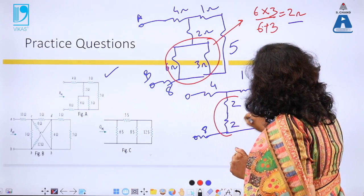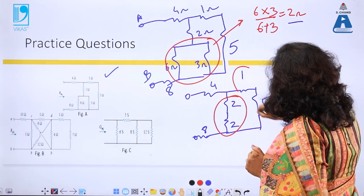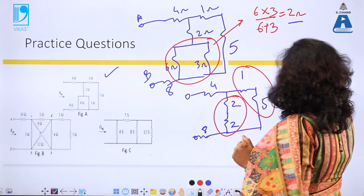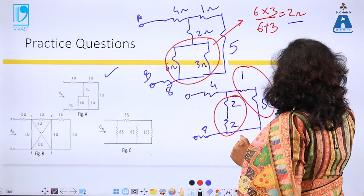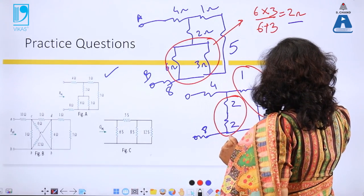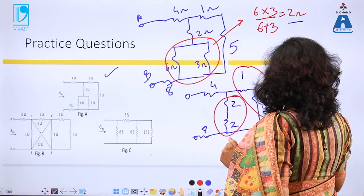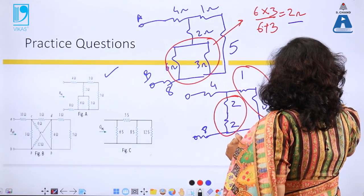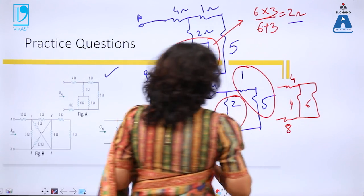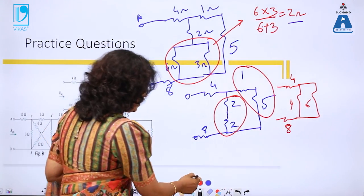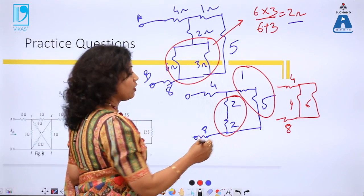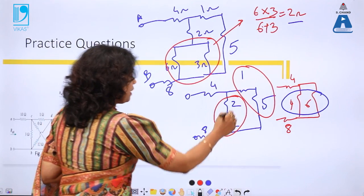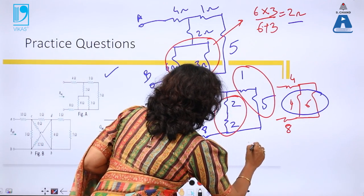Redrawing: replacing the 6 Ω and 3 Ω parallel combination with 2 Ω. Now 2 Ω and 2 Ω are in series giving 4 Ω, and 1 Ω and 5 Ω are in series giving 6 Ω. So now we have 4 Ω, 8 Ω, and 4 Ω and 6 Ω in parallel.